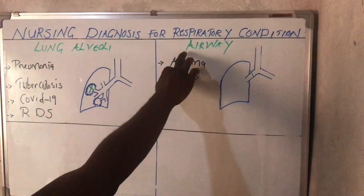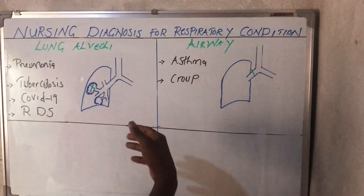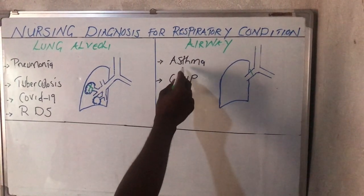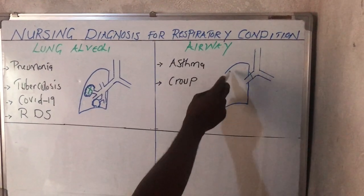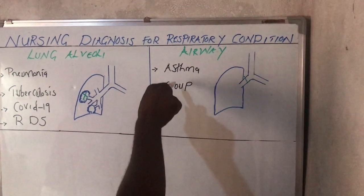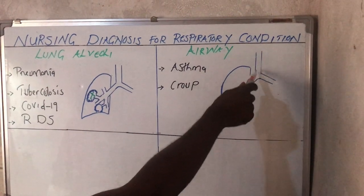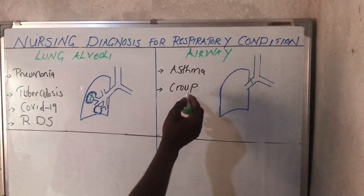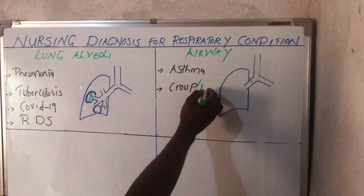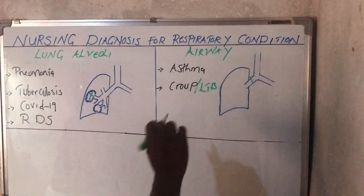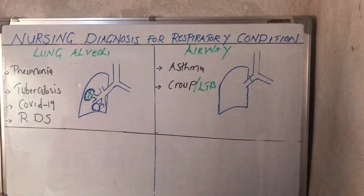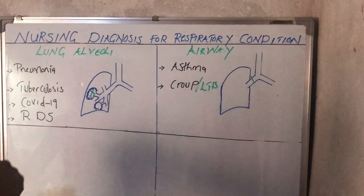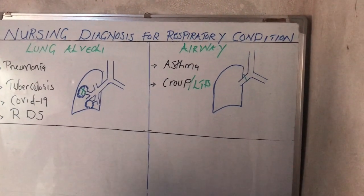On this side of the board, we have the airway. These conditions affect the airway — they do not occur inside the lung tissue, but happen along the airway, such as the trachea and bronchi. Under these conditions, we have asthma and croup, also known as laryngotracheobronchitis, abbreviated as LTB. These conditions happen in adults as well as in pediatrics.